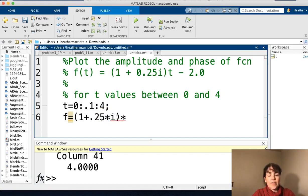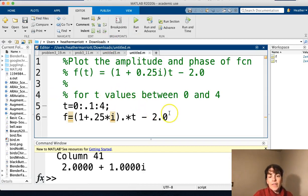And again, we've got times t, and for every element of t, we're going to be running this function, minus 2.0. And I'll just run that to make sure we've got our values of f.